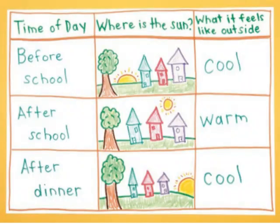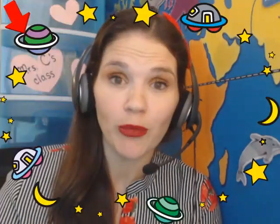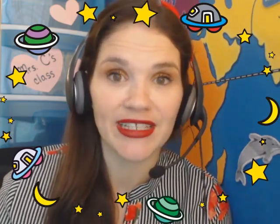So now I want to look at that information together with you closer up. Let's make that chart a bit bigger. So I can see right here it says time of day. Toby has recorded the different times he observed the sun outside. He observed it before school, after school, and after dinner. Where is the sun? He's drawn pictures for us where he can see the sun in the sky at these different times. He's also recorded what it feels like outside. What's the temperature? So it feels cool, it feels warm, and then it feels cool again. This chart shares all of the information that Toby found in a really clear and easy to understand way.